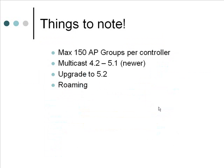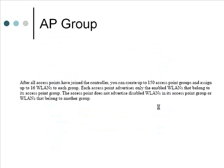Before going into the configuration, here are some things to note. In AP grouping, after all access points have joined the controller, you can create up to 150 access point groups and assign up to 16 WLANs to each group. Each access point advertises only the enabled WLANs that belong to its access point group. The access point does not advertise disabled WLANs in its group or WLANs that belong to another group. You cannot exceed 150 access point groups within a controller.